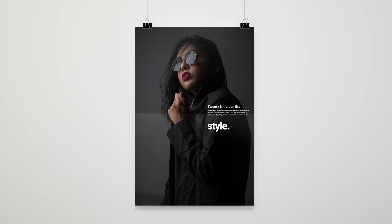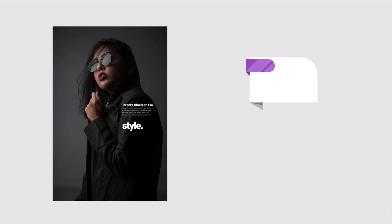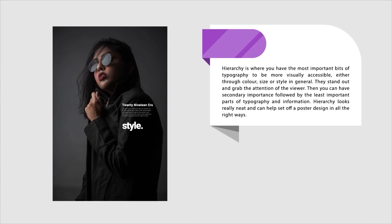The next way to use typography cleverly for a poster design is to use hierarchy. I've actually used hierarchy on all of the posters in today's video because it is so effective, but I've made it very clear in this demonstration. Hierarchy is where you have the most important bits of your typography laid out in a more visually accessible manner — either through color, size, or style. You then have secondary importance, followed by the least important parts of the text. Hierarchy looks really neat and can help set off a poster design in all the right ways.